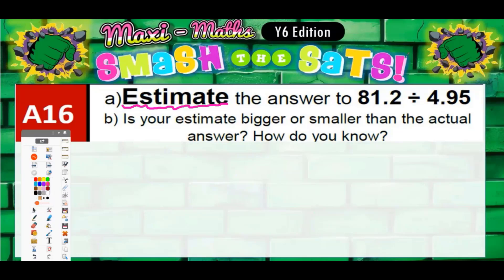So rounding 81.2 and rounding 4.95 - well, if you were to round this to 81 and round this 4.95 to 5, then you would have to be doing 81 divided by 5.